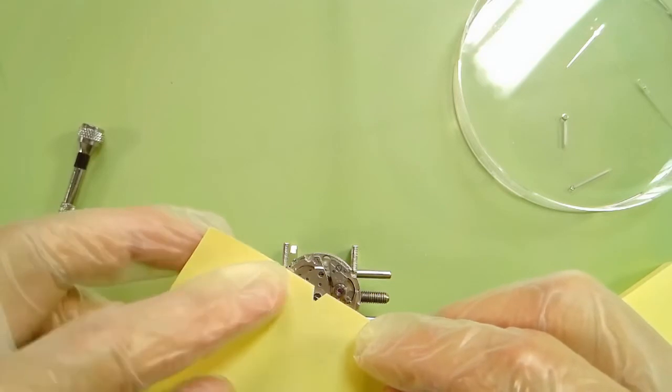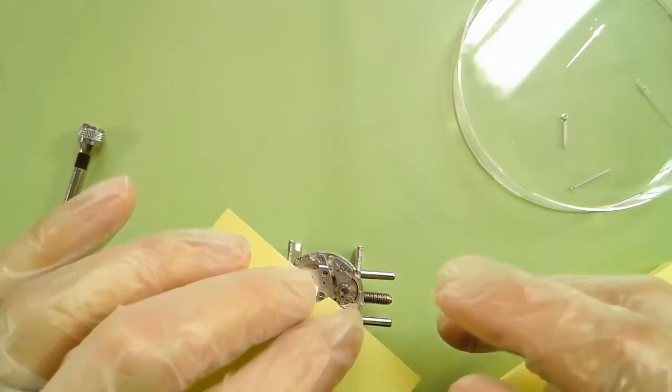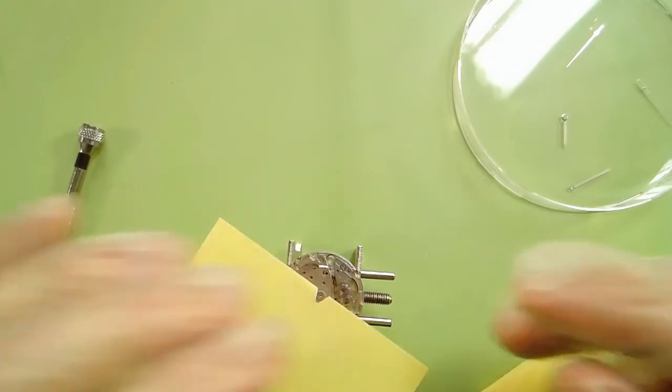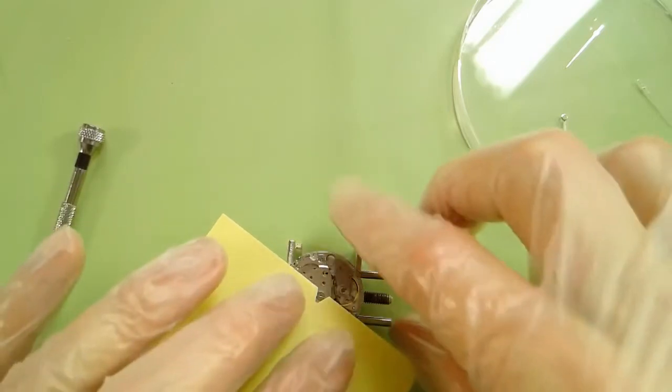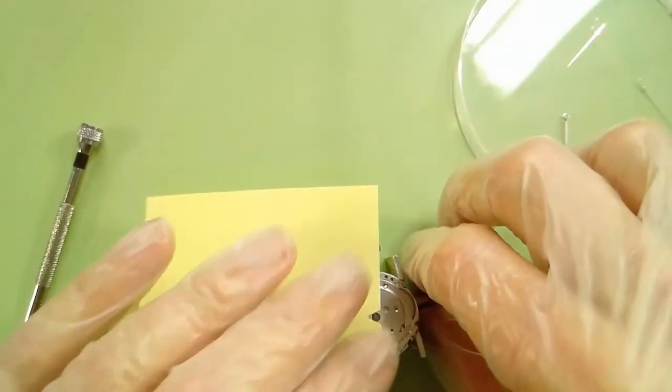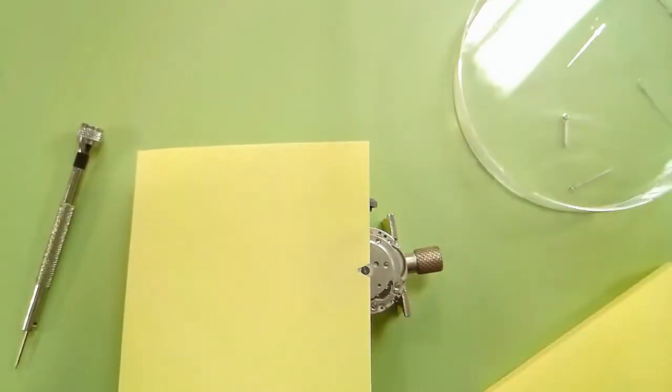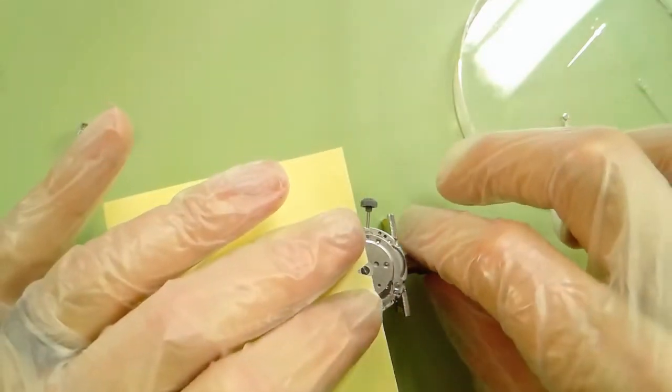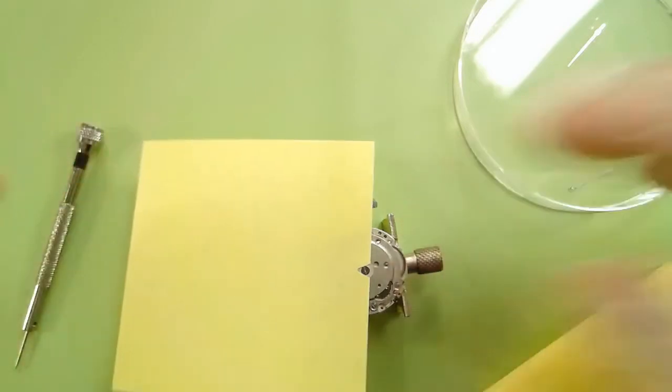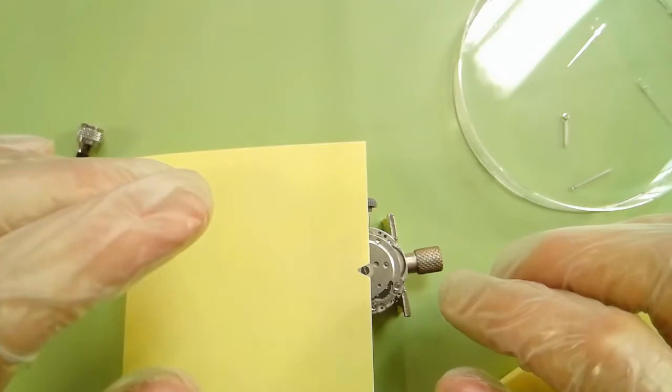I'm going to put that like so over the rotor so it sticks to the rotor. And then I want you to turn the rotor so it is covering the escapement, the balance wheel, the hairspring. And the purpose of this is two-fold.